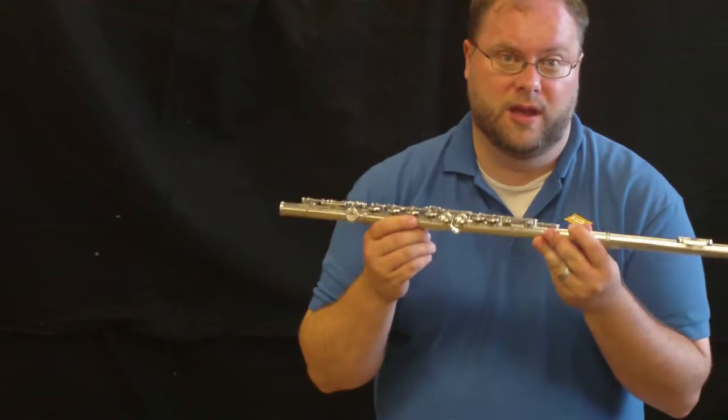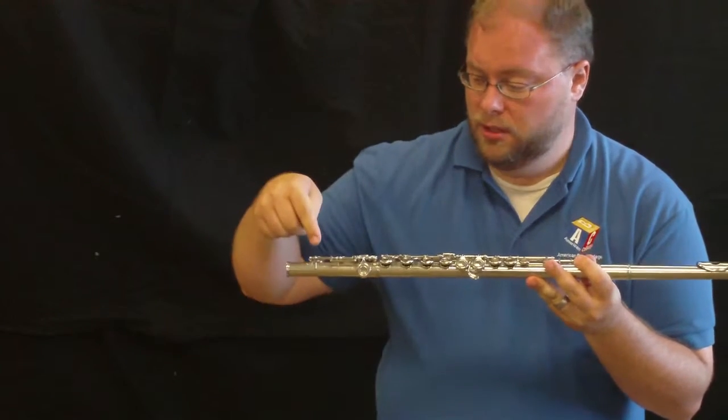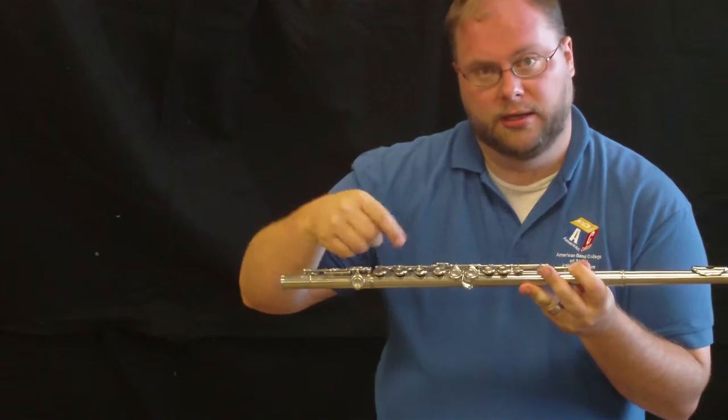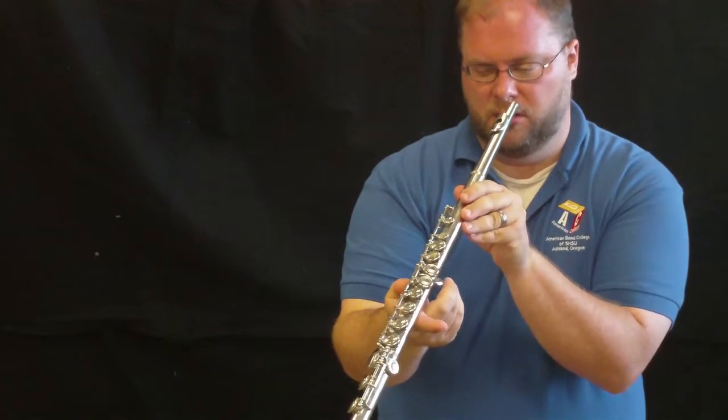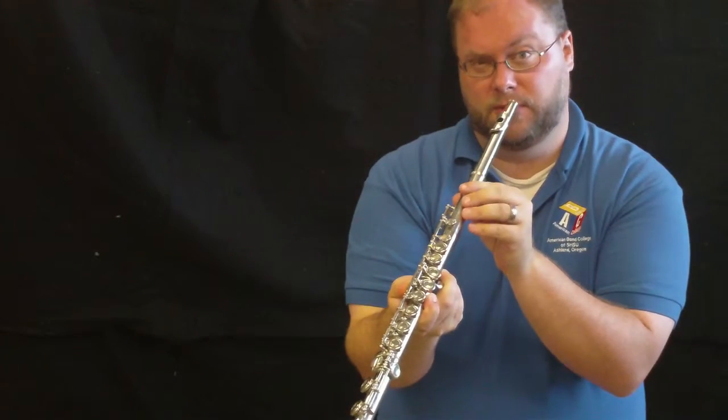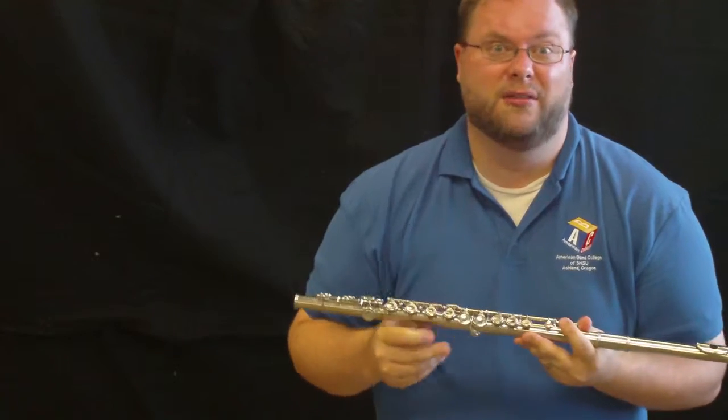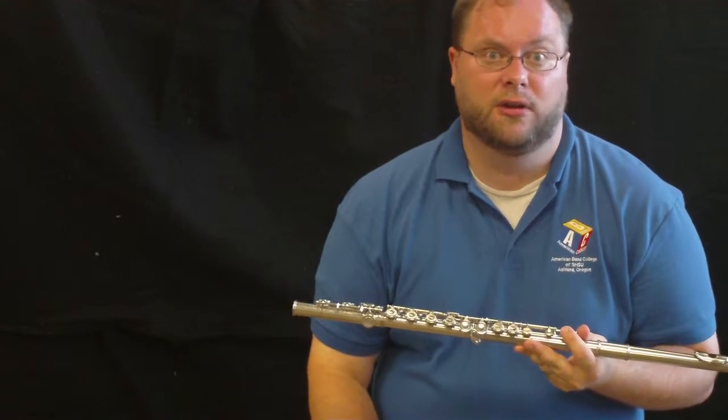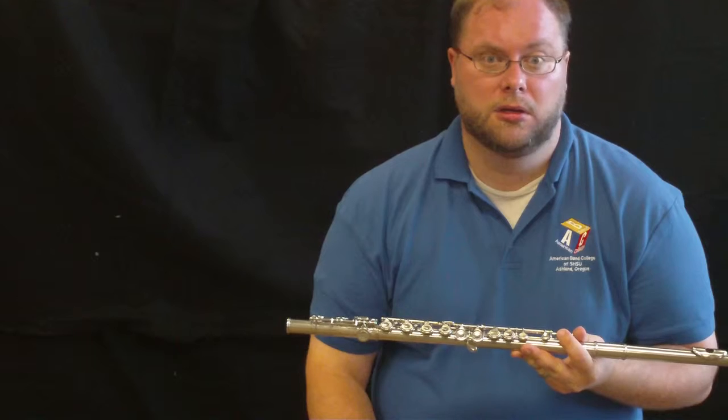All right, so we just put together our flute. We have it fully put together properly. The foot joint here, we have our bar lined up. We've lasered down our hole to make sure that it's lined up with our keys. Now that we have all that, we need to figure out where to put our flute or how to hold our flute.